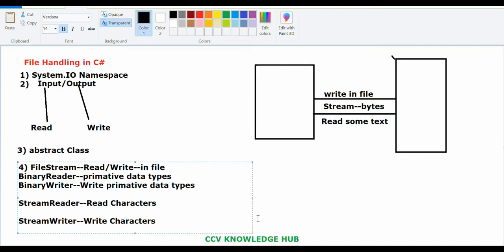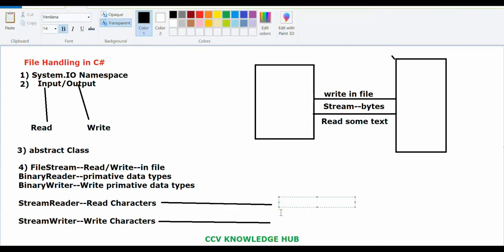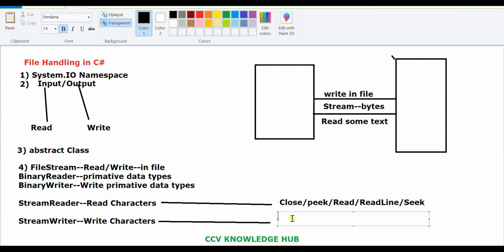Let's concentrate on StreamReader and StreamWriter classes and see what methods they have. StreamReader class has methods like Close, Read, ReadLine, and Seek. StreamWriter class also has methods like Close, Flush, Write, and WriteLine.